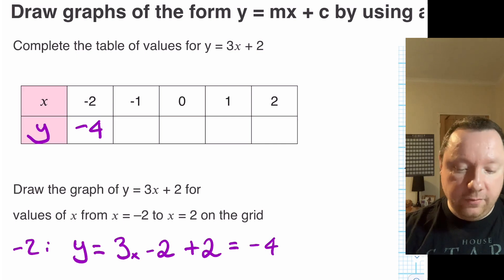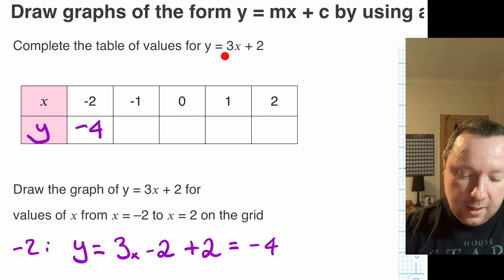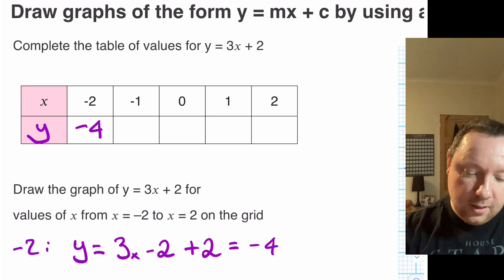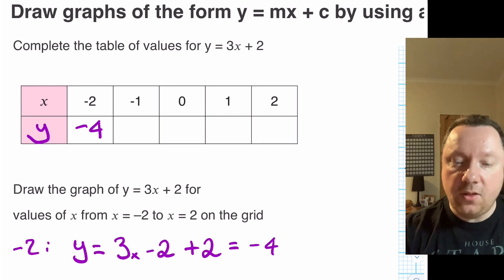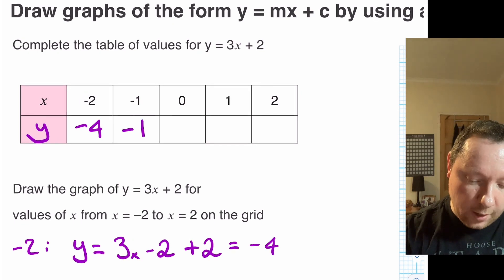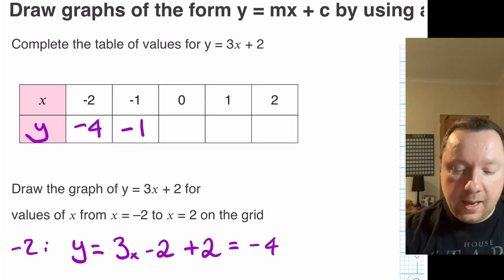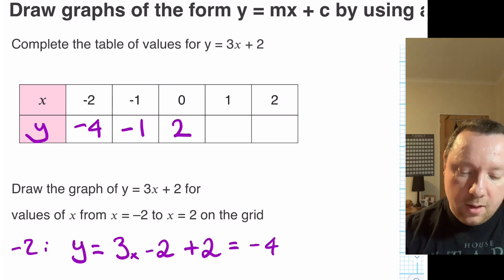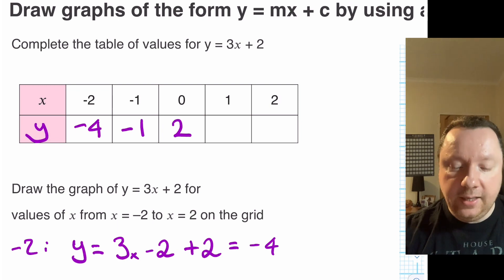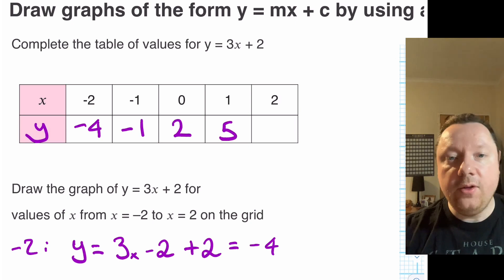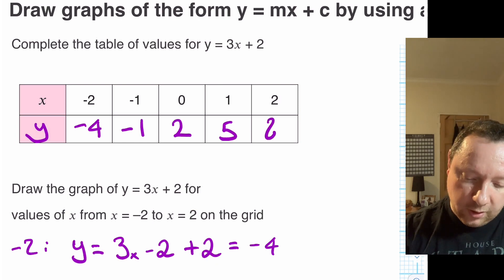I'm going to do the same thing for every single number on the top line — times it by 3 (the number in front of x) then add the number at the end. The second one: 3 times minus 1 is minus 3, add 2 gives me minus 1. The 0: 3 times 0 is 0, add 2 gives me 2. The 1: 3 times 1 is 3, add 2 makes 5. And then the 2: 3 times 2 is 6, add 2 gives me 8.